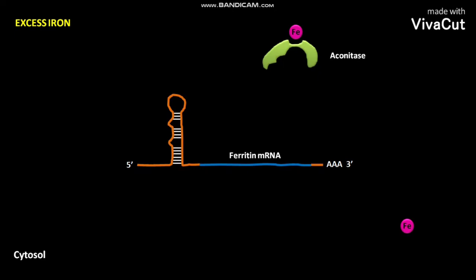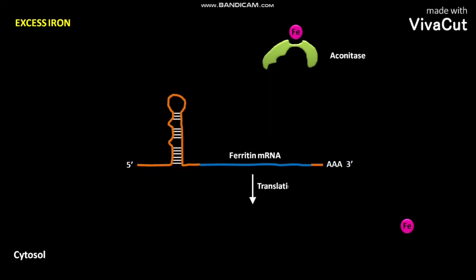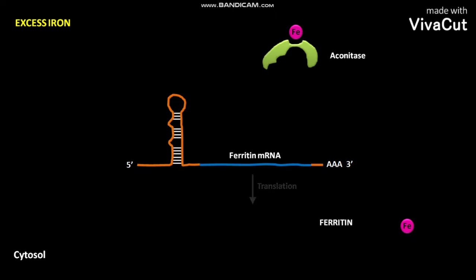As a result, the iron-bound aconitase dissociates from the ferritin mRNA. As a result of this dissociation, the ferritin mRNA undergoes translation and produces ferritin. The ferritin then binds to the excess iron.